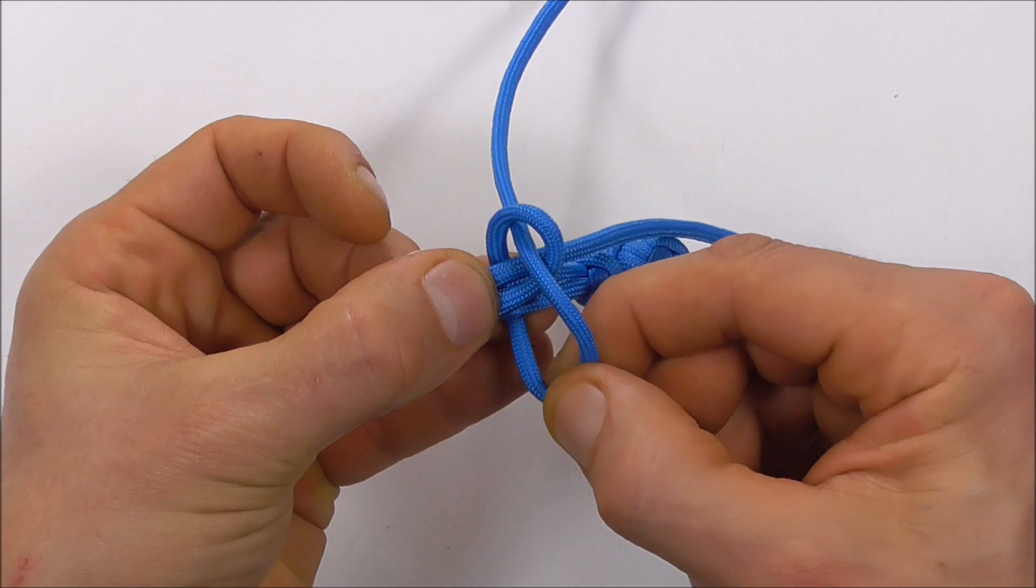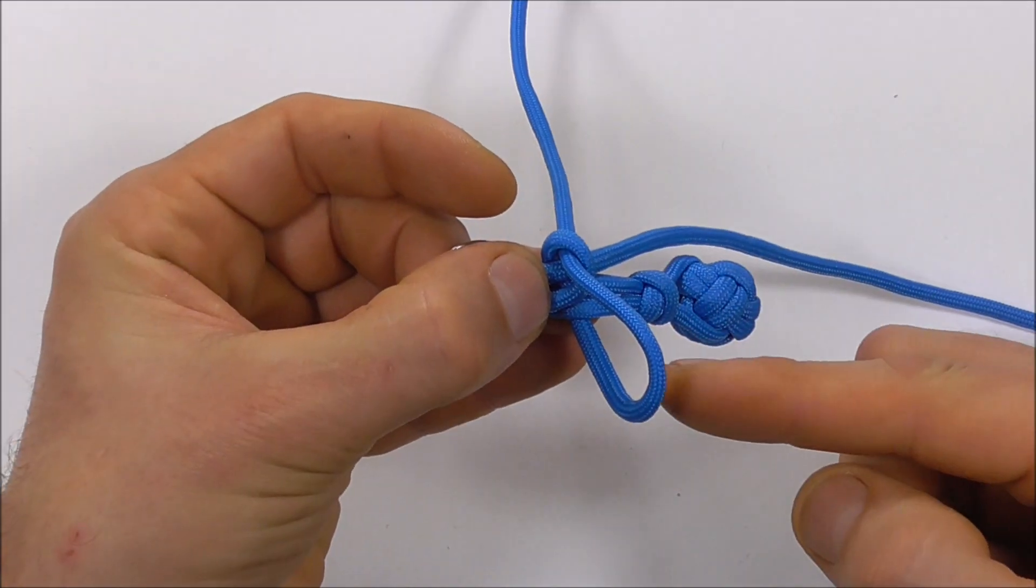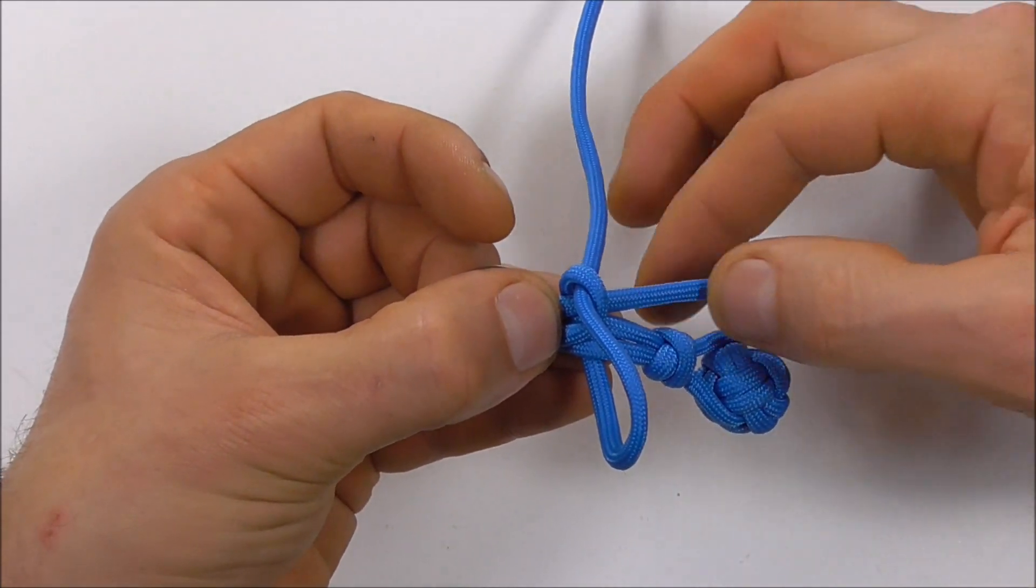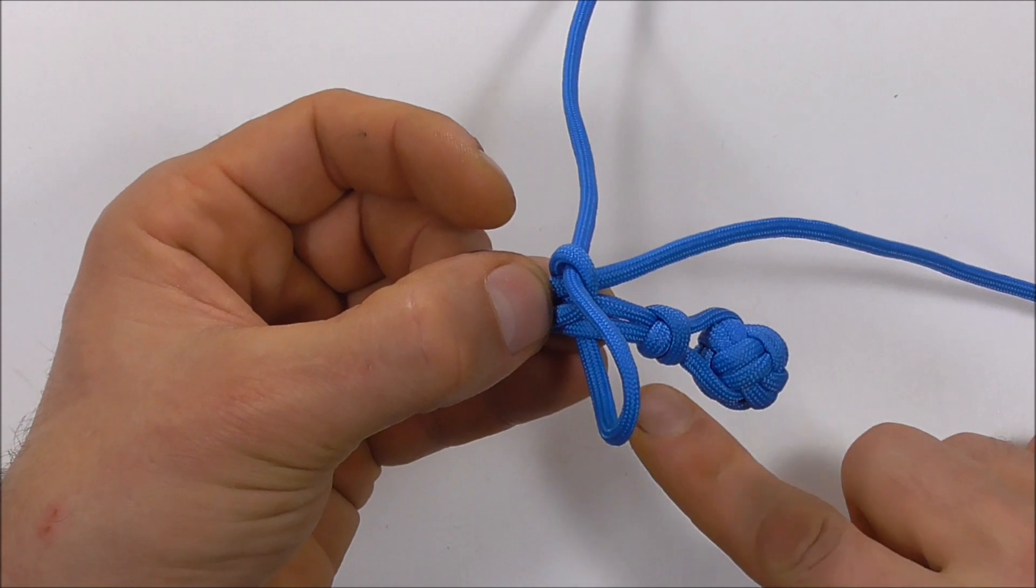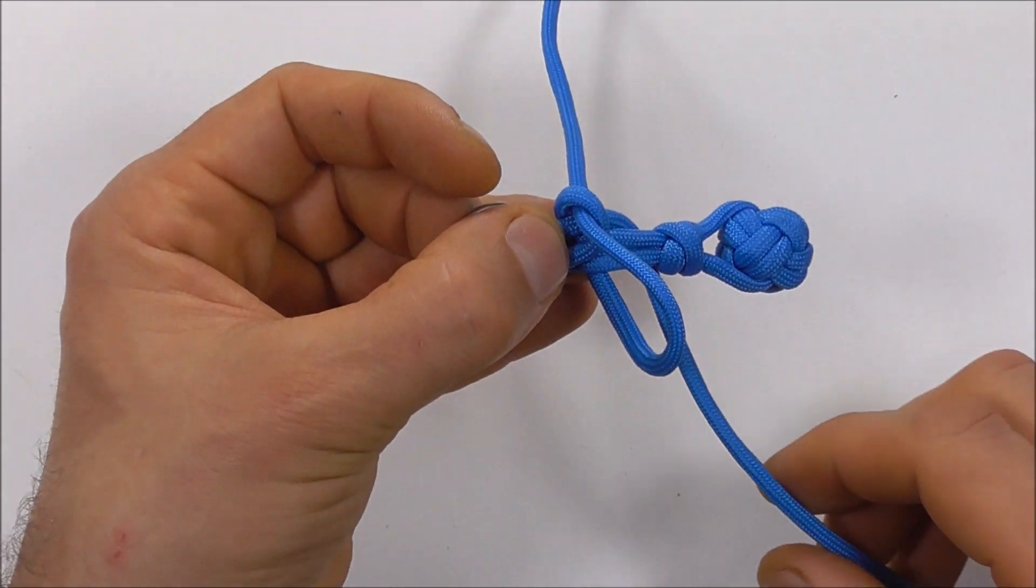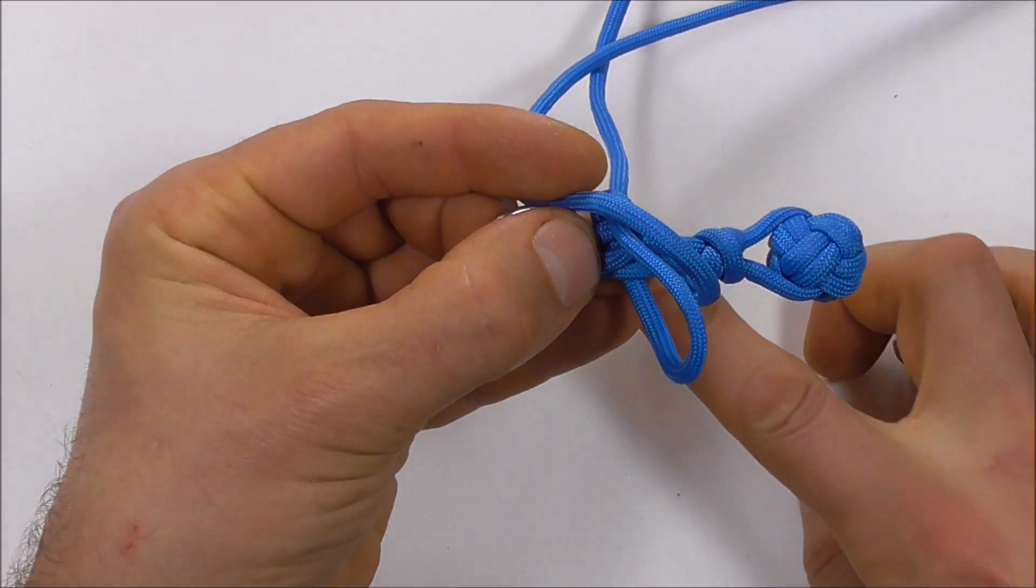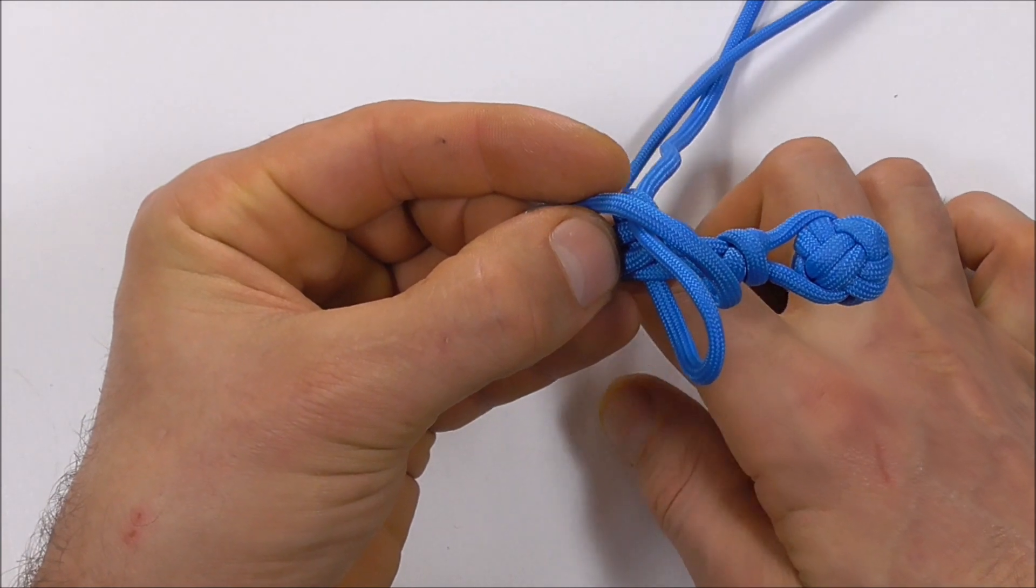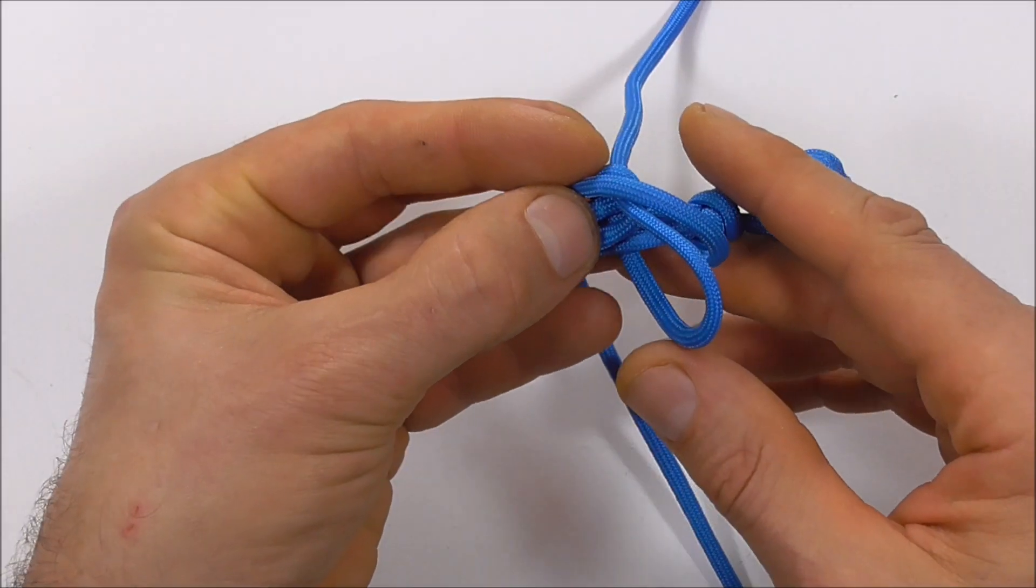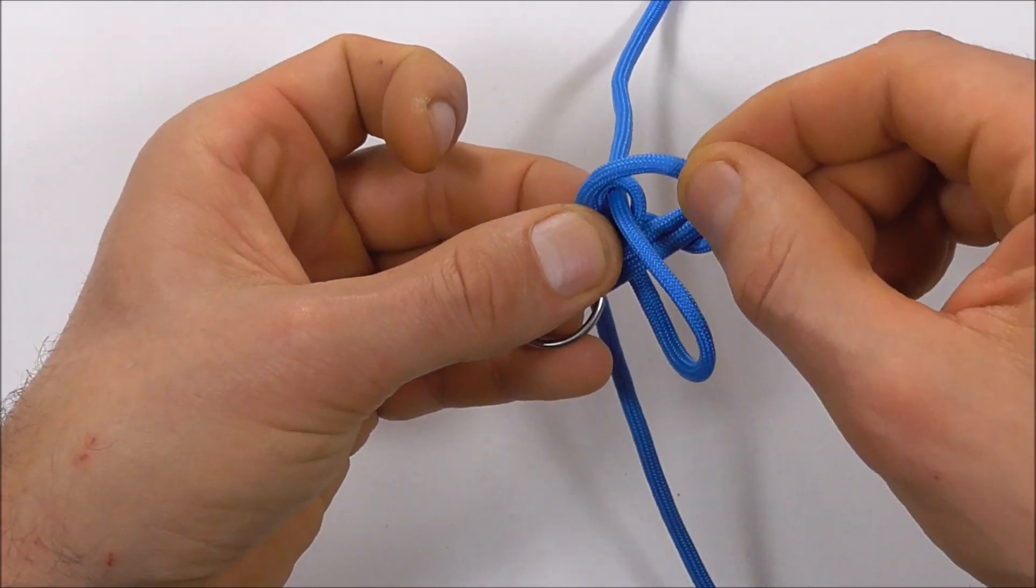Grab the bottom part and close that top loop down so we have a loop down here at the bottom. Now with our other strand, we want to come in underneath, take it to the front, then over to the back, and then all the way back to the front. That's formed a loop here at the back.